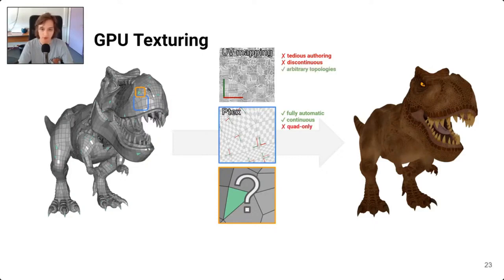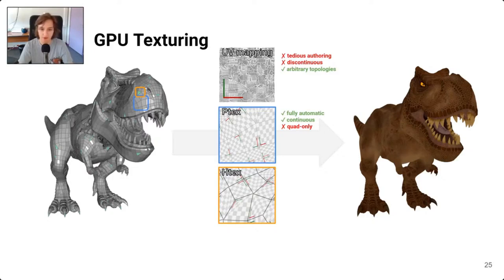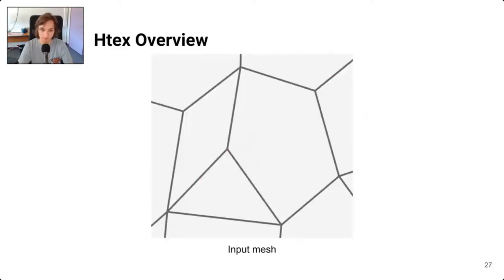In this work we introduce a novel quadrangulation that allows mapping square textures onto the surface of any topological configuration. The resulting parameterization may look complex at first sight, but it is actually very simple to build and requires no additional data other than that of a half-edge mesh. It is so simple that I can summarize our entire approach in a few slides.